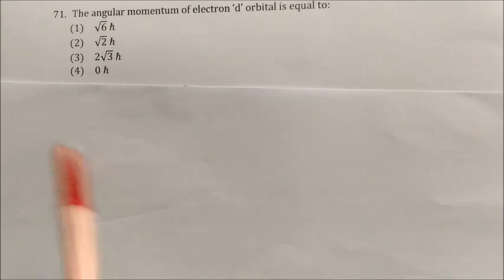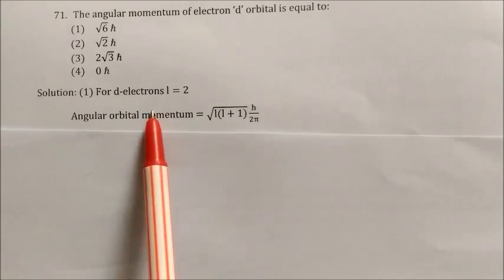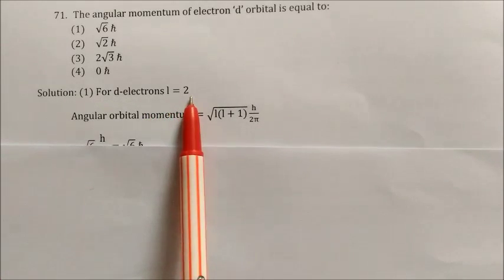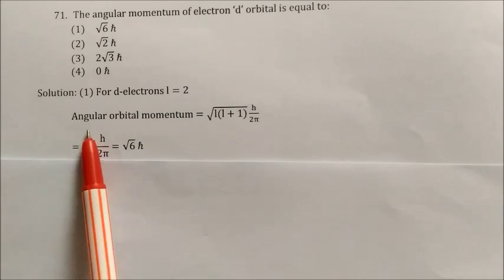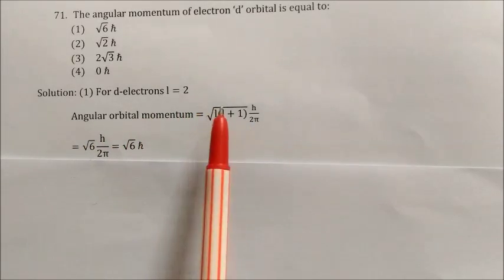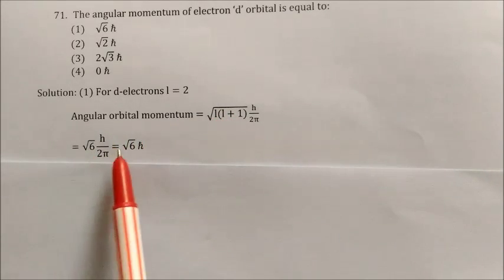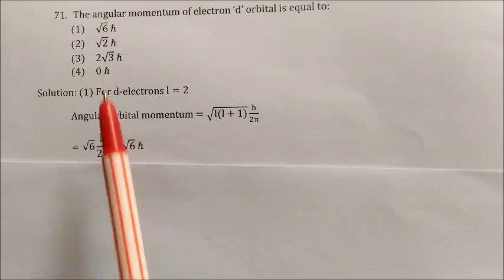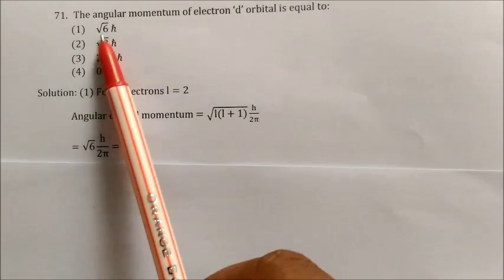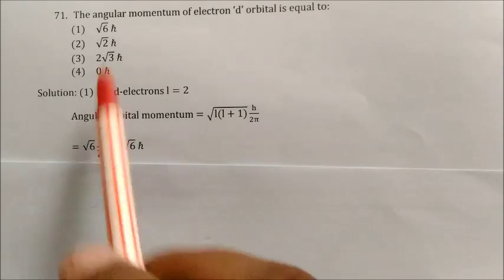Question: The angular momentum of an electron in a d orbital is equal to? For d electrons, the azimuthal quantum number L = 2. The formula for orbital angular momentum is √(L(L+1)) × ℏ = √(2×3) × ℏ = √6 × ℏ, where ℏ = h/2π. So the angular momentum = √6 × (h/2π). Answer: option 1.